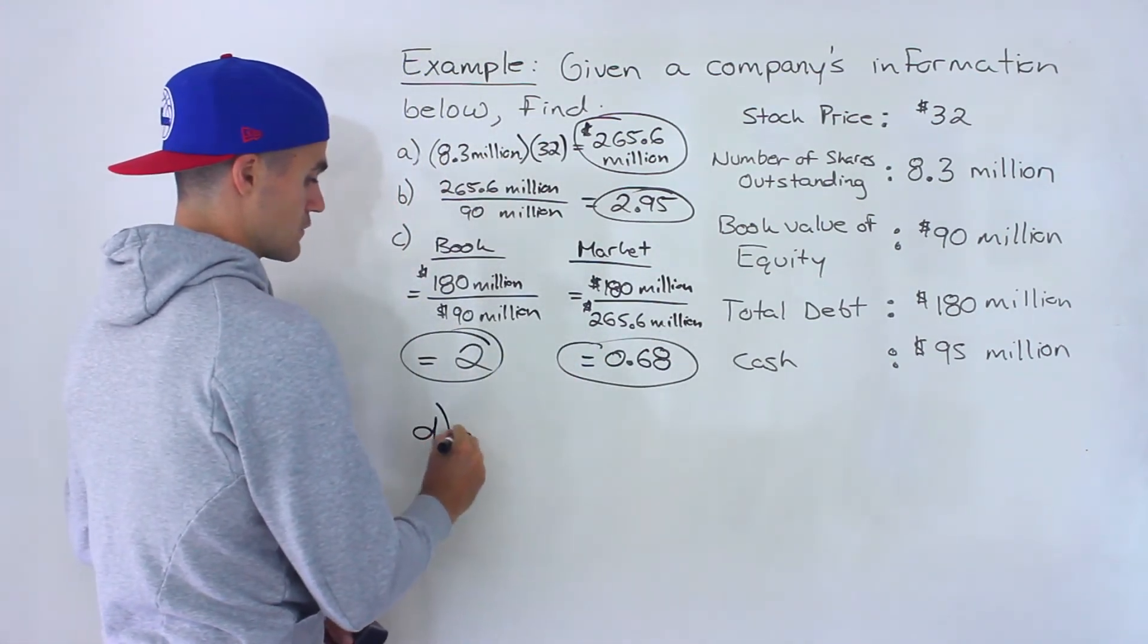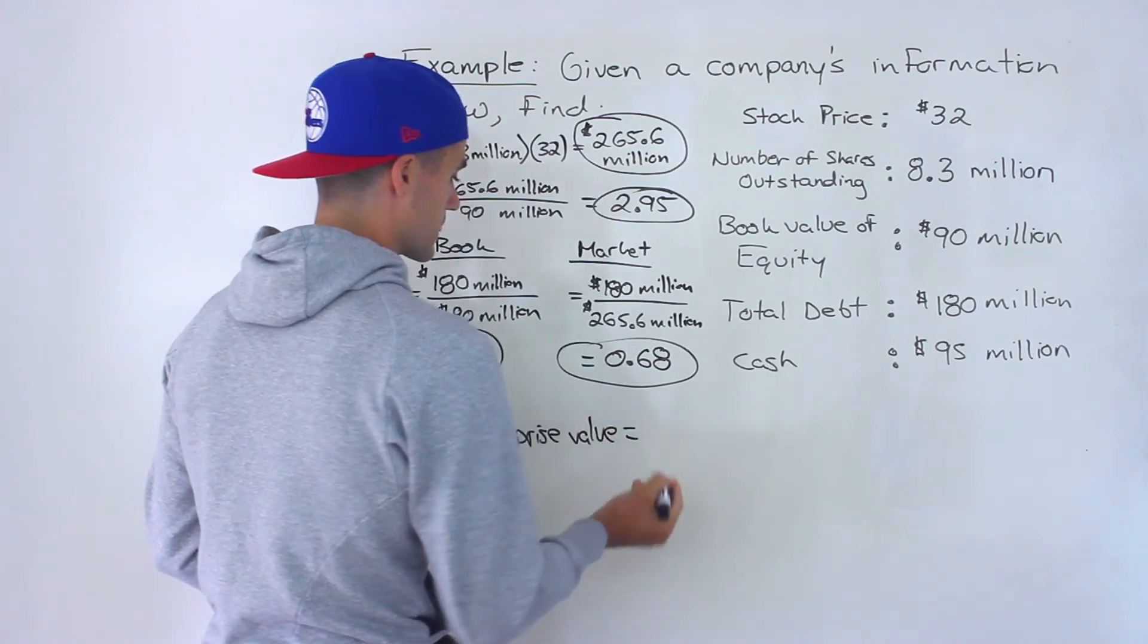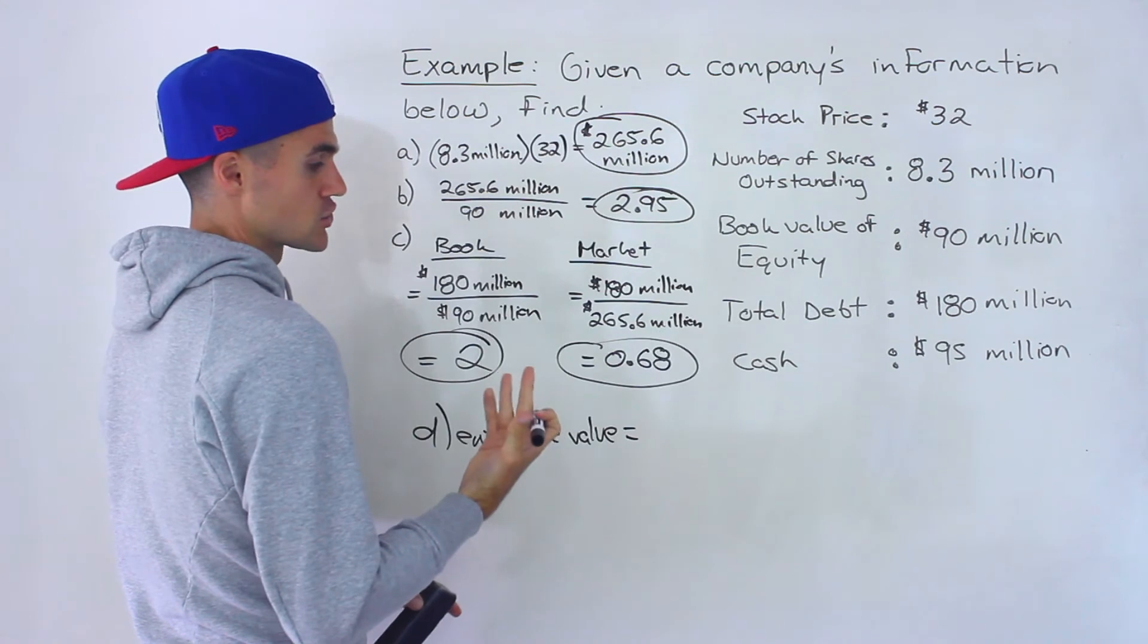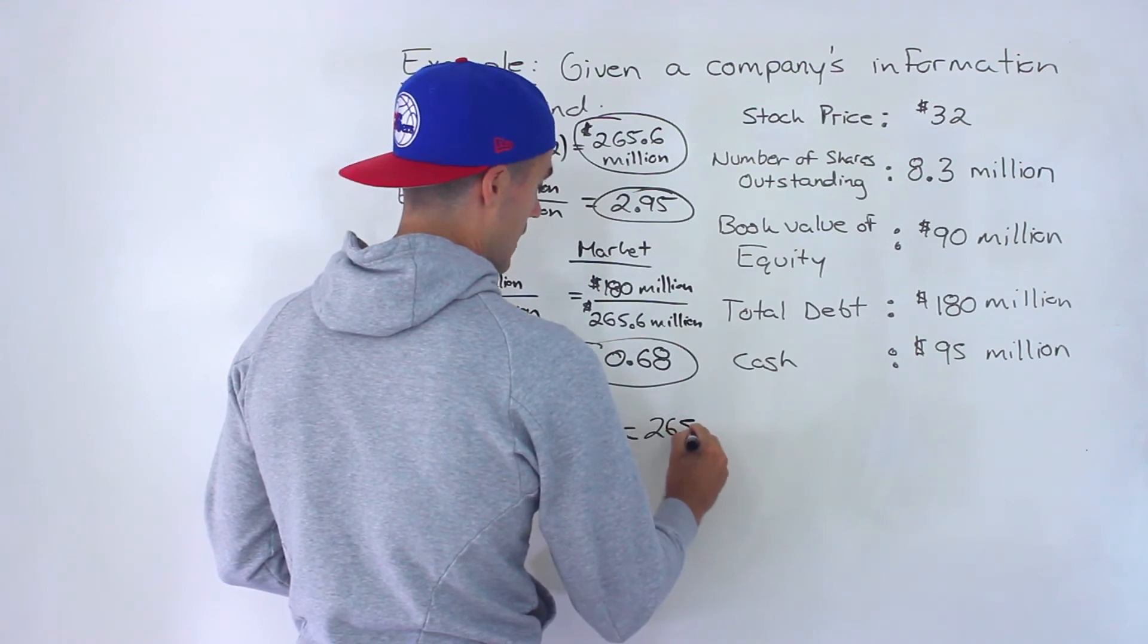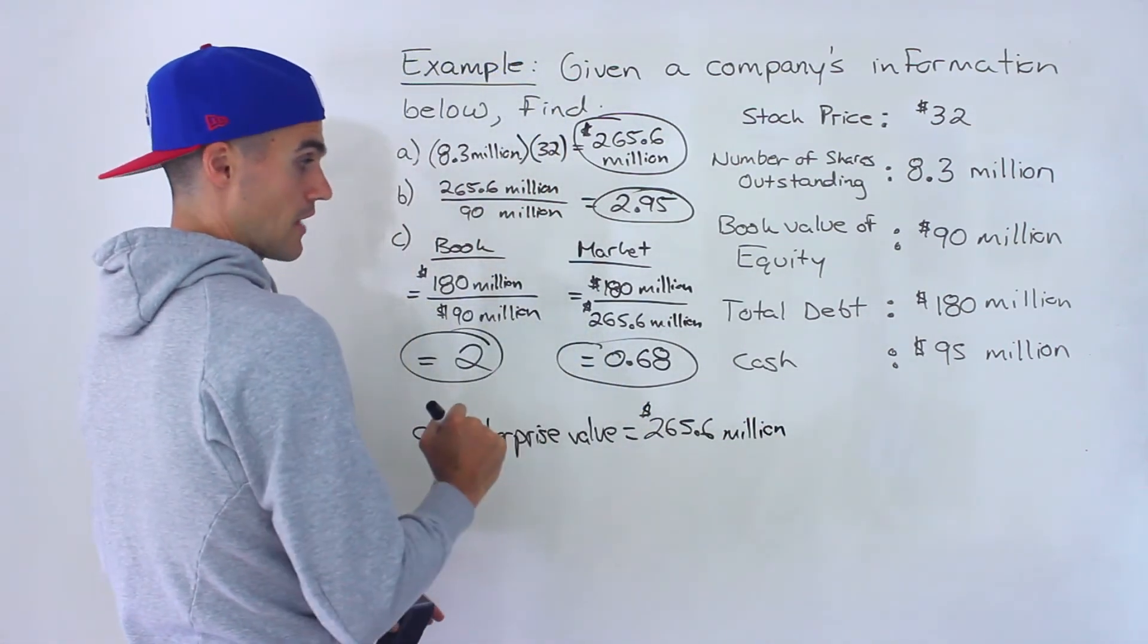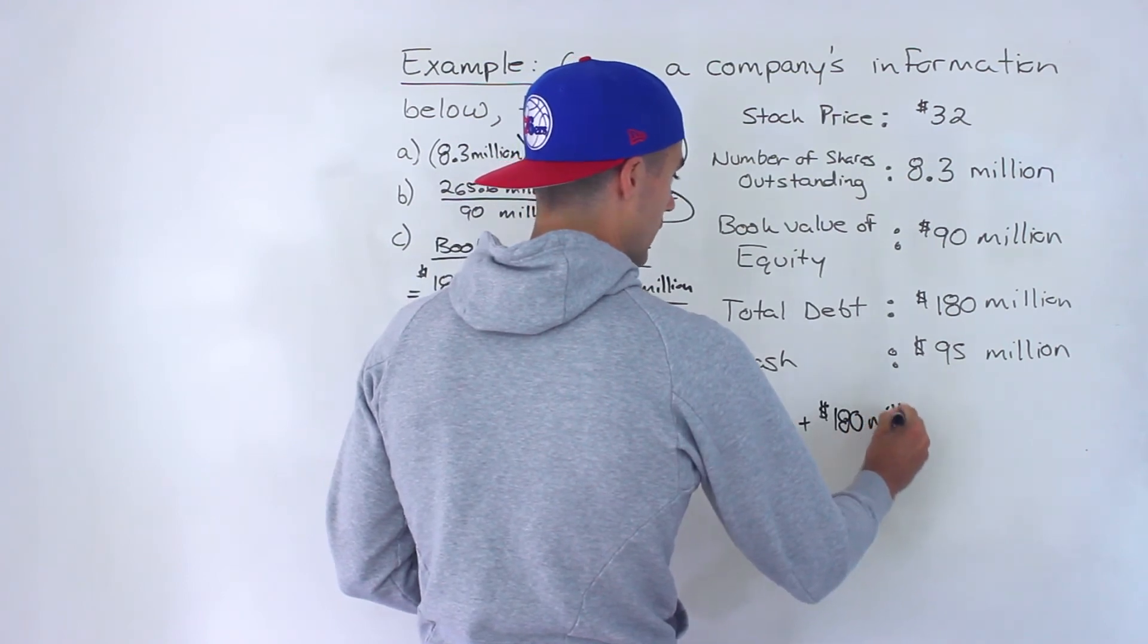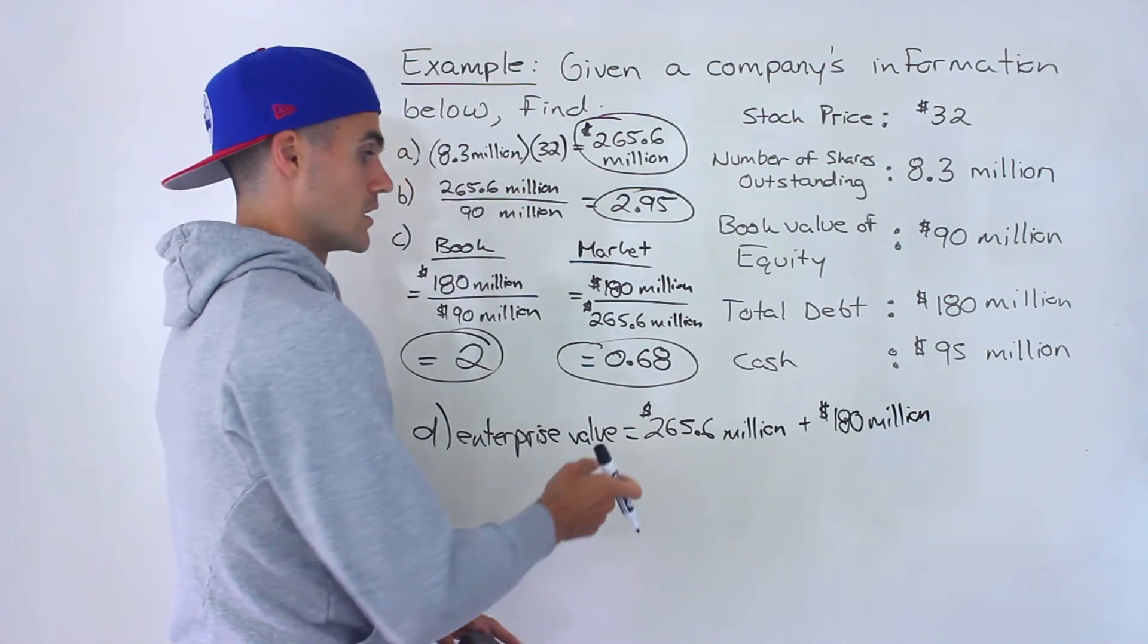And then D is asking for the enterprise value. And the enterprise value is basically the right side of the balance sheet, the market value of the right side of the balance sheet minus any cash. So the market value of the equity, 265.6 million. And then on top of that, we're going to add the debt that's on the right side of the balance sheet. Now with the debt, we're not told whether this is book value or market value. Since we're only given one figure, we can assume that it's the market value.